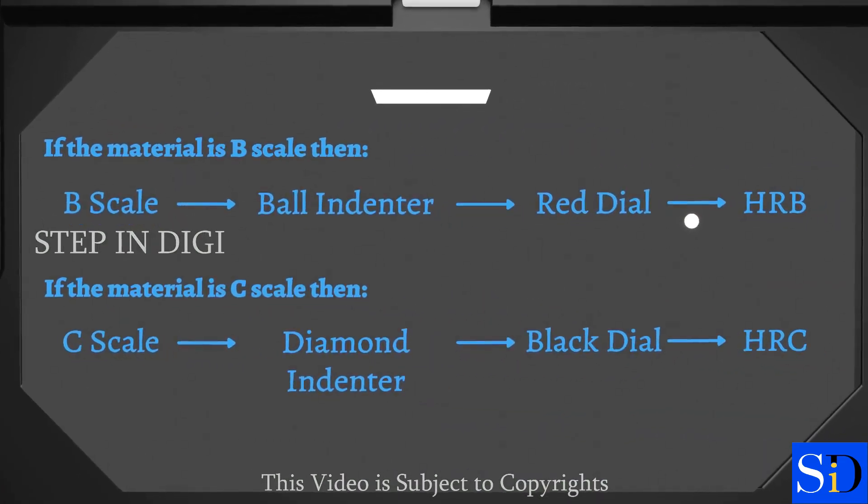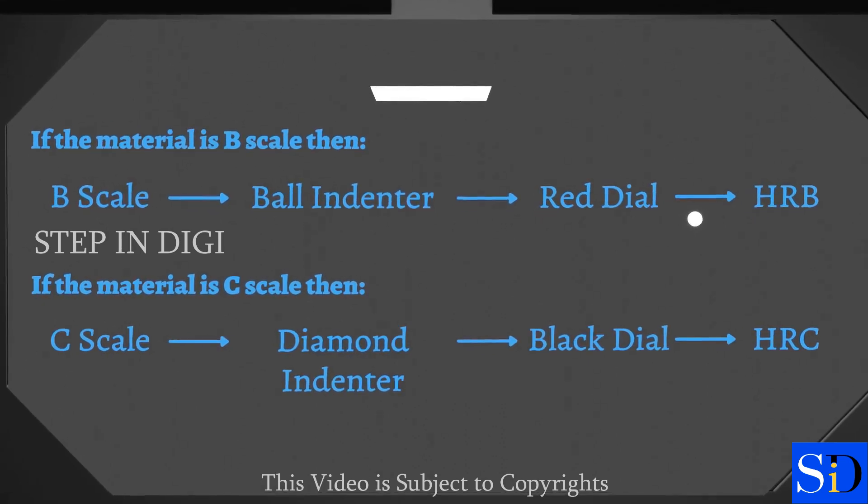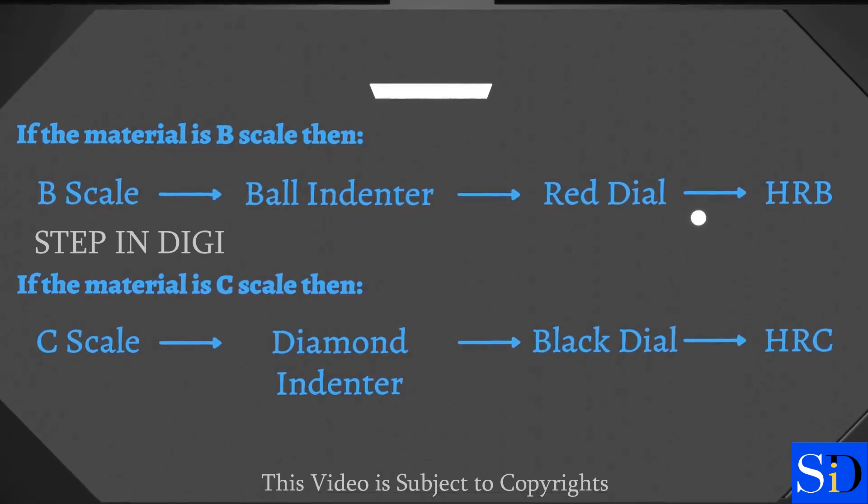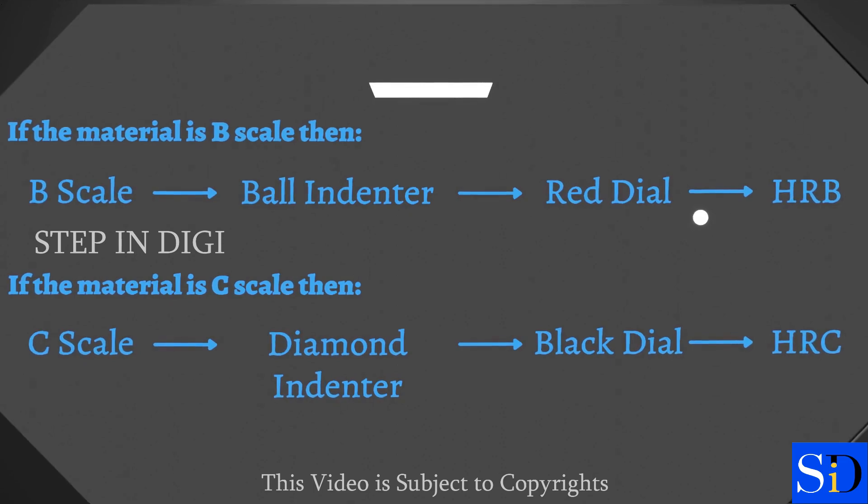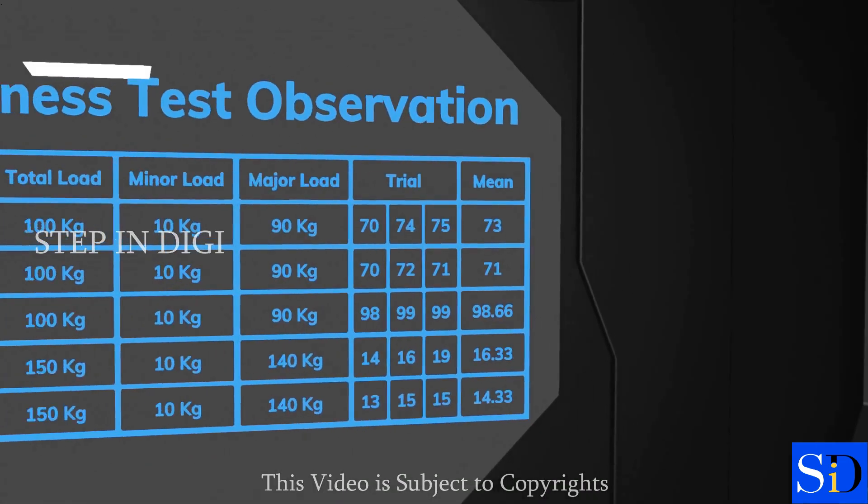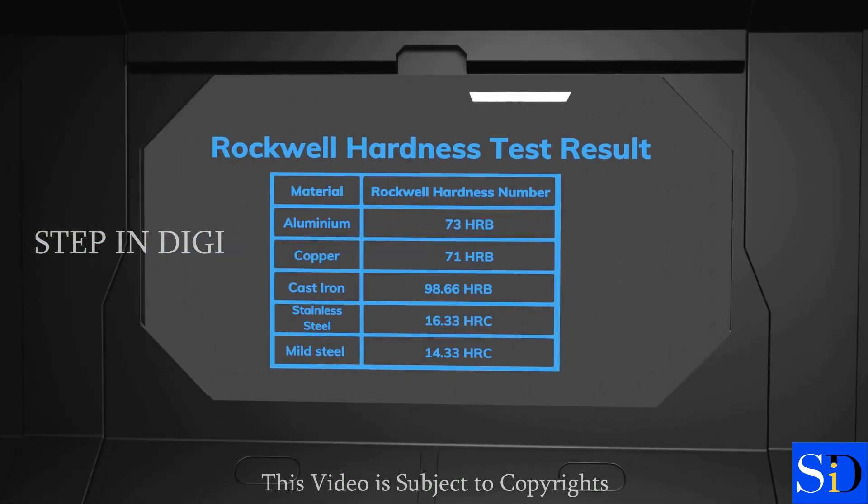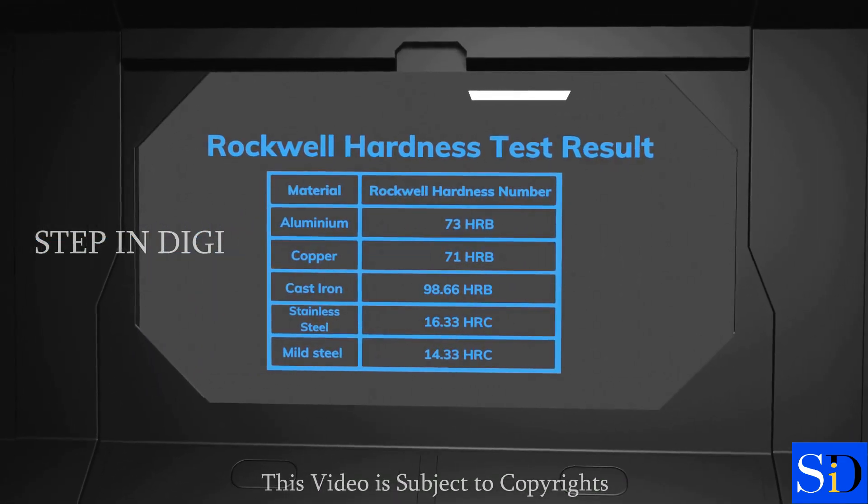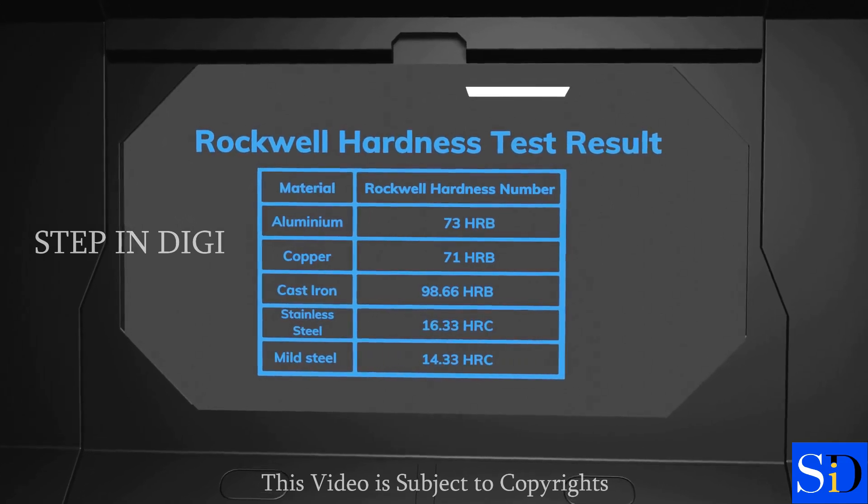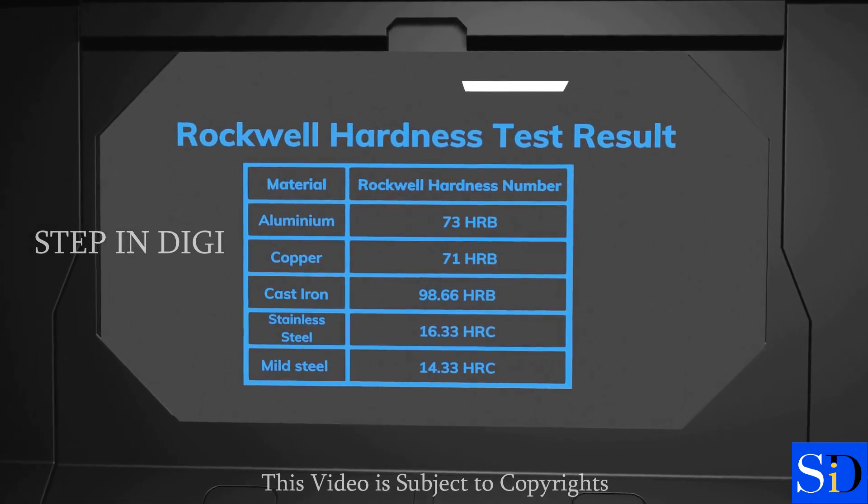HRC represents the hardness number on the Rockwell C scale, while HRB represents the hardness number on the Rockwell B scale. So, from the mean values of the observation table, let us conclude to the final results. The higher the Rockwell hardness number, the harder the material, but only relative to other numbers within a given scale.